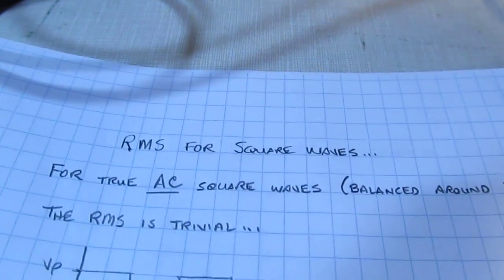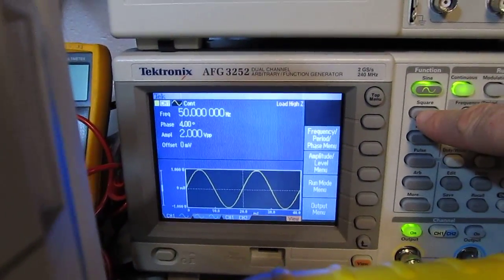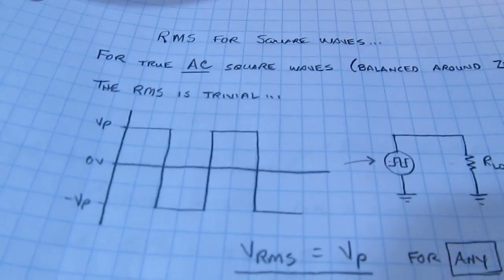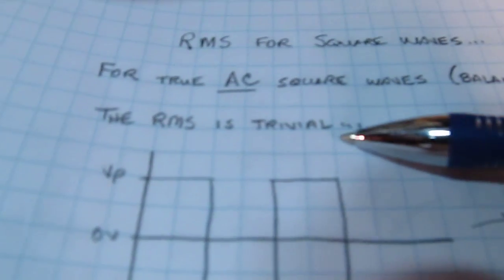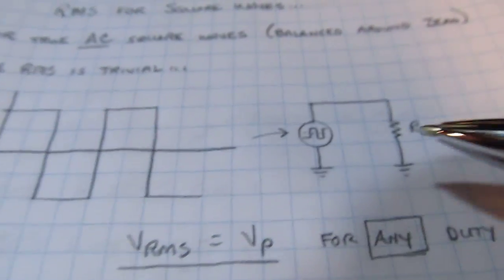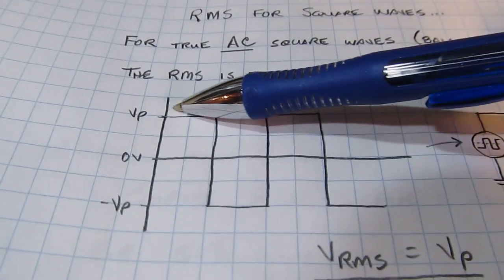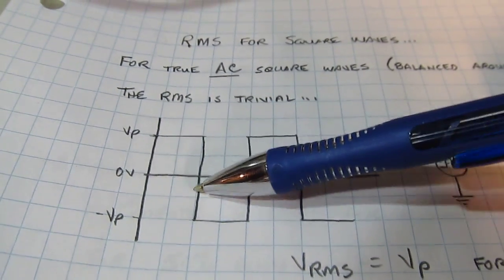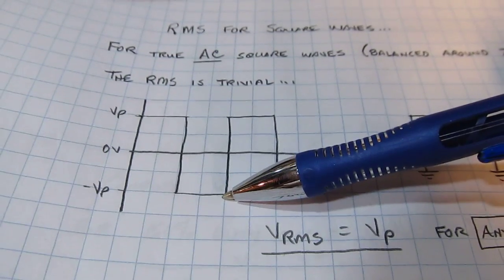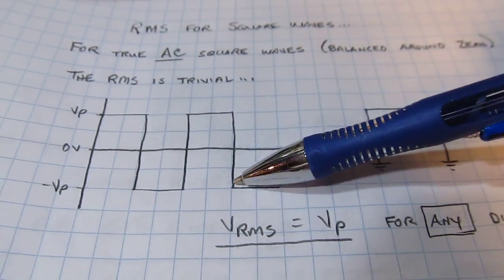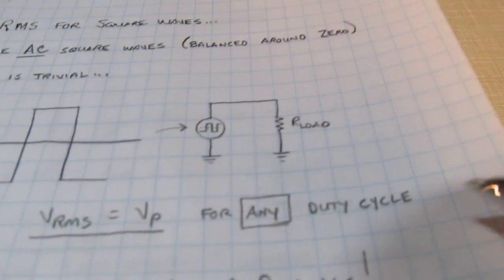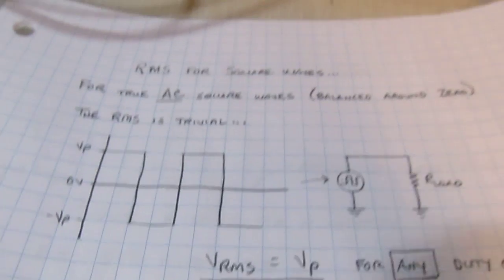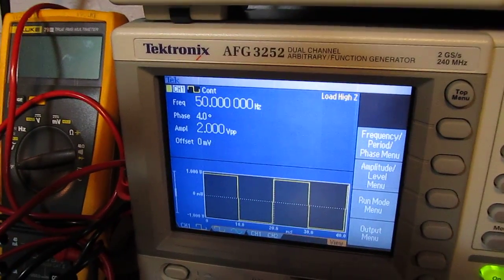But when we take a look at square waves, things aren't so easy. So let's switch the waveform over here to square and see what we've got. For square waves, if we have a simple AC square wave that's balanced around 0, the RMS value is almost trivial. Because we recognize that I've got a peak voltage across the load here. I also have that same peak voltage just in the other direction here. So essentially we always have that same peak voltage across the load. So the RMS value is simply equal to the peak for any duty cycle.